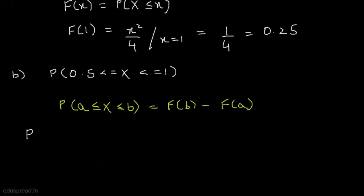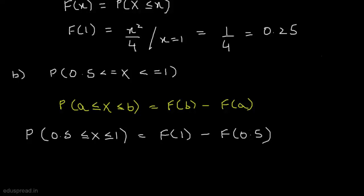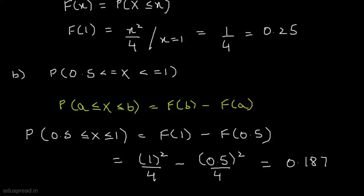So the probability that X is between 0.5 and 1 equals F(1) minus F(0.5). We know F(x) = x² / 4 for values of x between 0 and 2. This becomes 1² / 4 minus 0.5² / 4, and solving this we get 0.1875. So this is the answer to part B.